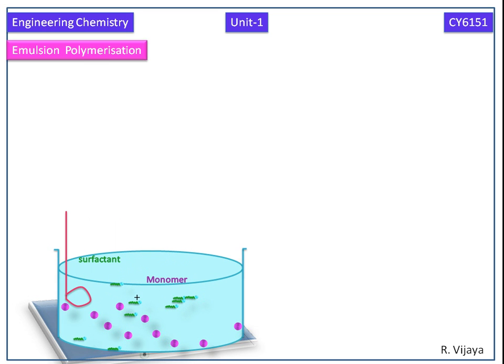Then free radicals are generated in the aqueous phase by adding initiators. The whole content is heated at constant temperature with vigorous agitation in a thermostat under nitrogen atmosphere. Now we see the mechanism.